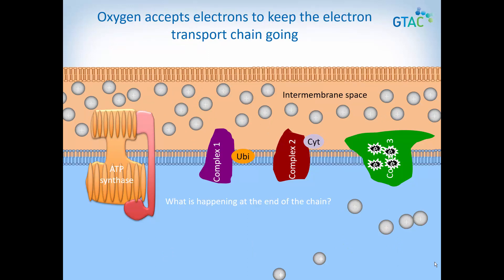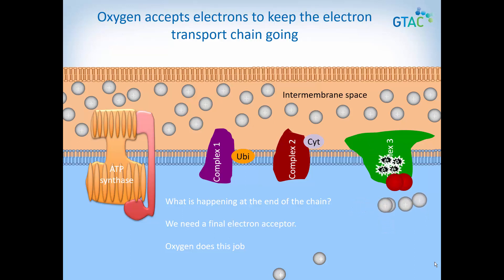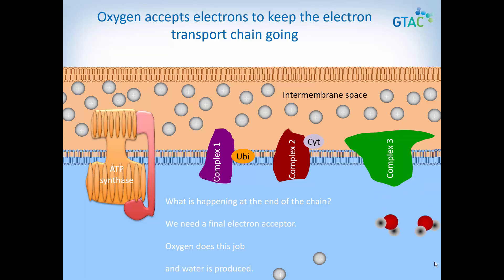Can you see a problem starting to emerge at the end of the electron transport chain? The final protein in the chain is getting overcrowded with electrons. If they are not removed, the flow of electrons through the chain gets jammed up — it's a little like blocking the end of a tunnel. If cars are blocking the end, then other cars can't move through. We need a final electron acceptor to remove the electrons so the flow can keep happening. It's oxygen — this is why we call it aerobic cellular respiration. In a quite dangerous reaction, oxygen picks up the electrons and some protons, and water is produced. Pause the video here so you can model this on your poster.